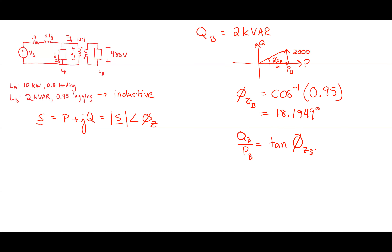The other approach: I could find the apparent power directly using sine. It's important to distinguish complex power from apparent power. Complex power S equals V times I-conjugate. The apparent power is the magnitude of S — the length of the hypotenuse of the power triangle.